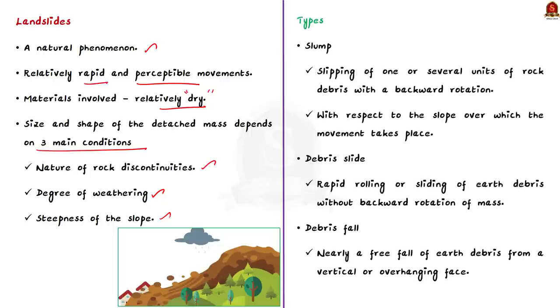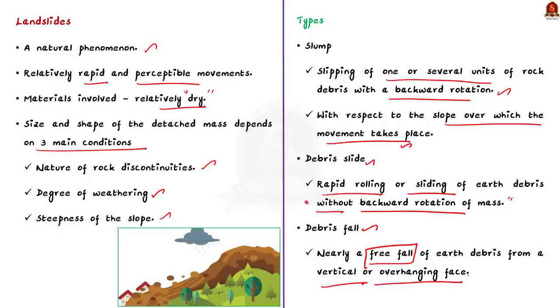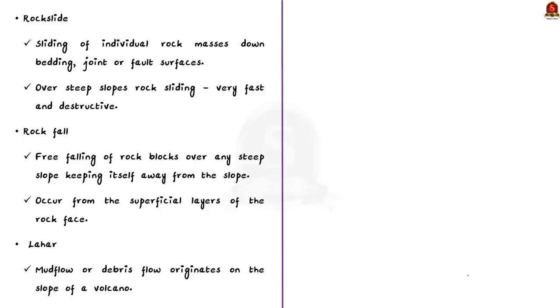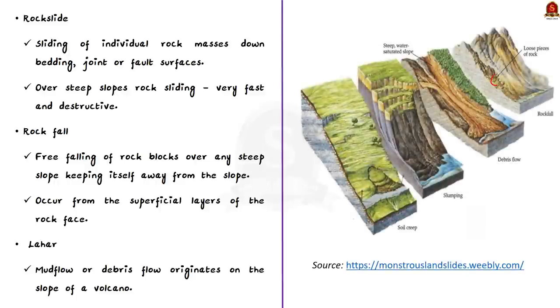Now, let us see the types of landslides. Depending upon the type of the movement of materials, several types are identified. First, let us take slump. Slump is the slipping of one or several units of rock debris with a backward rotation. This backward rotation is with respect to the slope over which the movement takes place. Secondly, let us take debris slide. Debris slide is the rapid rolling or sliding of earth debris without backward rotation of mass. Thirdly, let us take debris fall. Debris fall is nearly a free fall of earth debris from a vertical or overhanging face. Fourthly, let us take rock slide. Rock slide is the sliding of individual rock masses down bedding joints or fault surfaces. Over steep slopes, rock sliding is very fast and destructive. There is one more type of landslide which is called as lahar. Lahar is the mud flow or debris flow that originates on the surface of a volcano. This is usually triggered by heavy rainfall eroding volcanic deposits.